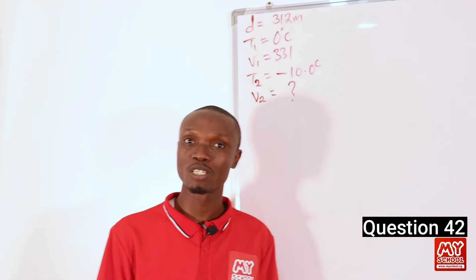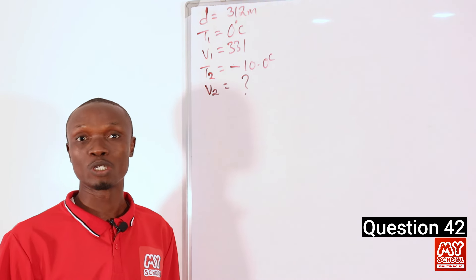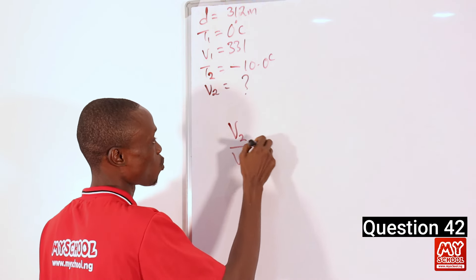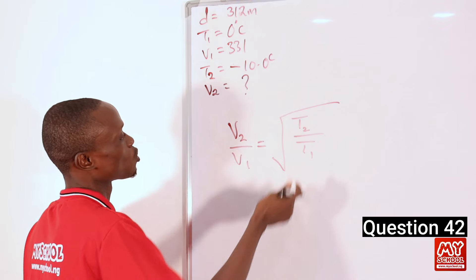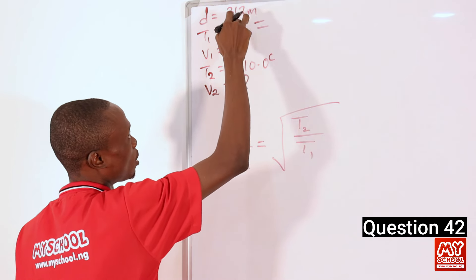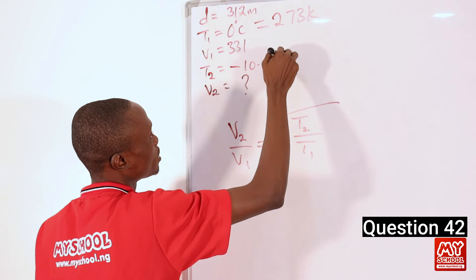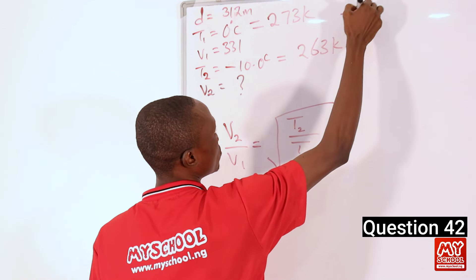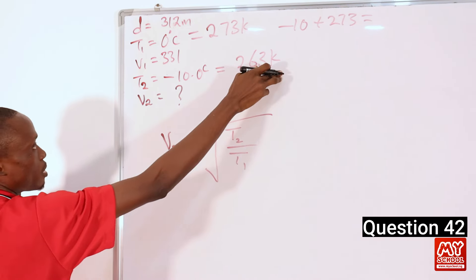For this question, one thing you must note is that the velocity of sound in air is directly proportional to the square root of its absolute temperature. So V2 over V1 equals the square root of T2 over T1. Temperature must be measured in Kelvin, so we have to convert: 0°C becomes 273 K, and minus 10°C becomes 263 K, because minus 10 plus 273 equals 263 K.